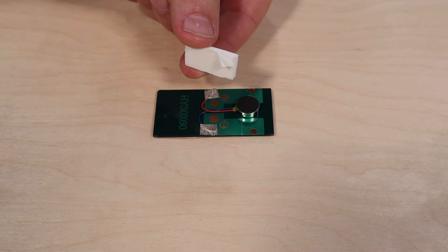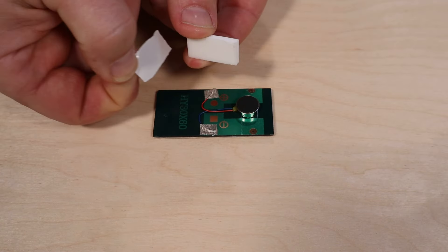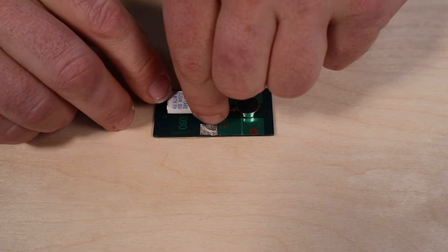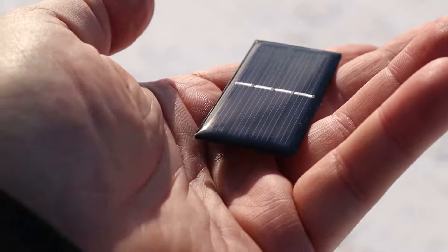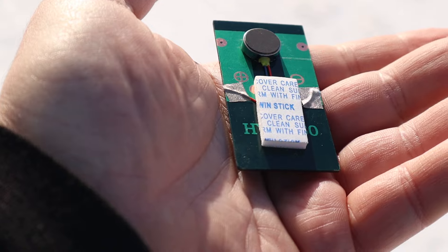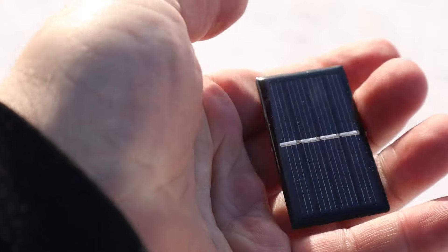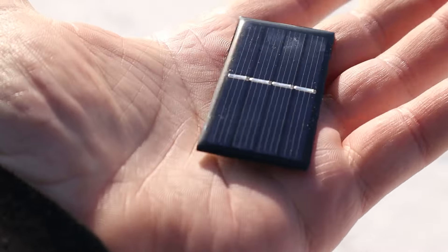Take a piece of double-sided foam tape and peel the backing off one side. Stick it down to the underside of the solar cell, either horizontal or vertical is fine. To test, go outside and face the solar cell towards direct sunlight. You will feel the motor start vibrating.